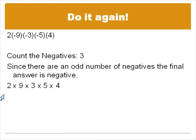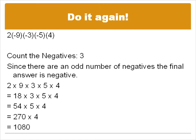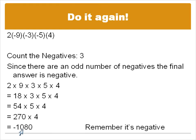So: two times nine times three times five times four. Starting at the left and moving to the right: two times nine is eighteen, eighteen times three is fifty-four, fifty-four times five is two hundred seventy, two hundred seventy times four is one thousand eighty. Now we've done all the multiplication from left to right. The point is to show how it works with negatives. We have to remember that it is a negative result, so our final answer is negative one thousand eighty. Count the negatives at the beginning, determine whether your final answer will be positive or negative, do your multiplication like they're all positive, and then apply that sign at the end.